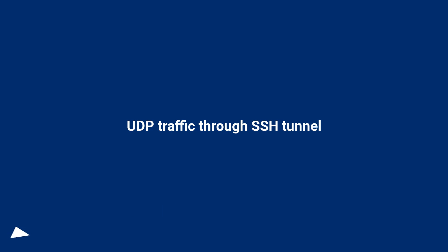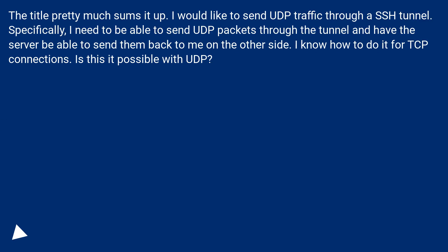UDP Traffic Through SSH Tunnel. The title pretty much sums it up. I would like to send UDP traffic through an SSH tunnel. Specifically, I need to be able to send UDP packets through the tunnel and have the server be able to send them back to me on the other side. I know how to do it for TCP connections. Is this possible with UDP?